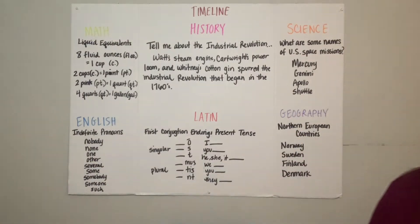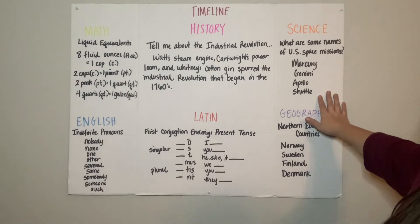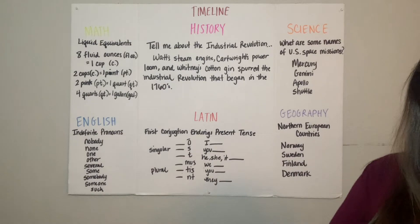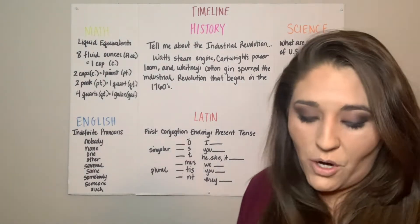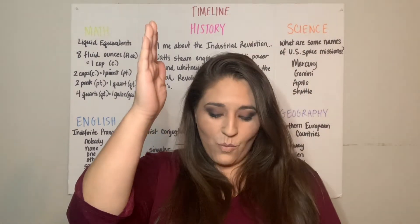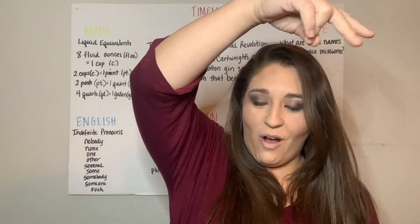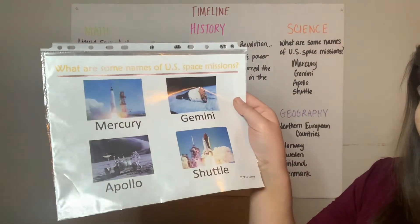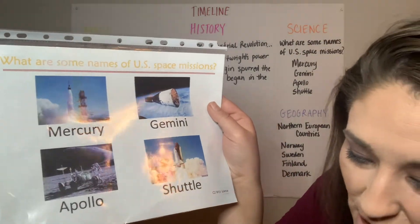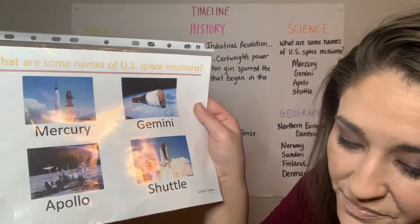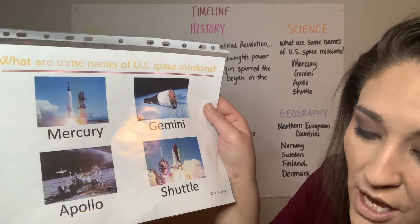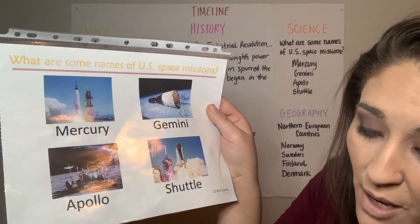Next we went into science and covered names of US space missions. Some of the hand motions we used were: Mercury going up, Gemini going over, Apollo with walking feet, and shuttle coming back down. We did this to the song Father Abraham. The song goes: what are some names of US space missions? Mercury, Gemini, Apollo, shuttle.